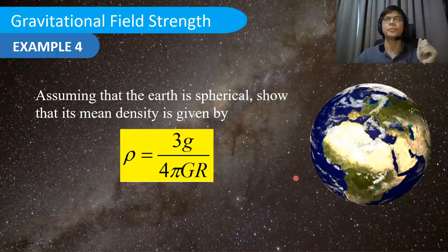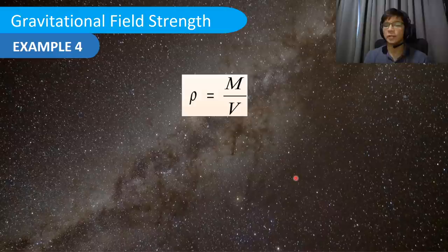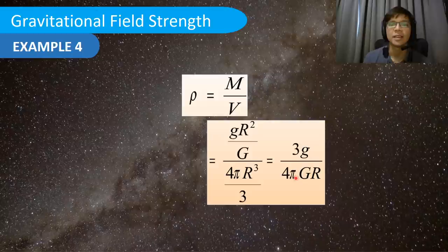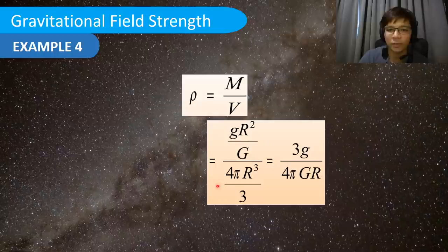In Example 4, assuming a spherical Earth of uniform density, we show that the density of the Earth is ρ = 3g/(4πGR). The density of any object is mass divided by volume. We substitute the mass of the Earth as M = gR²/G from Example 3, and the volume as V = (4/3)πR³ for a sphere. Dividing mass by volume and simplifying gives ρ = 3g/(4πGR), allowing us to estimate the average density of the Earth.